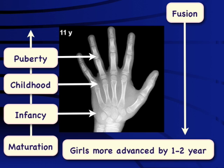It is important to keep in perspective that, as in many phases of life, girls are more advanced than boys by an average of one to two years. This is due to higher estrogen levels in girls compared to boys during different phases of maturation, even in the prepubertal stage.